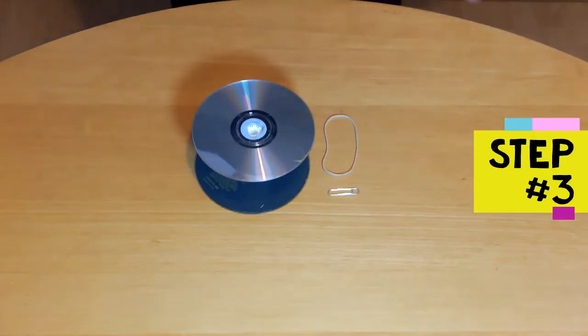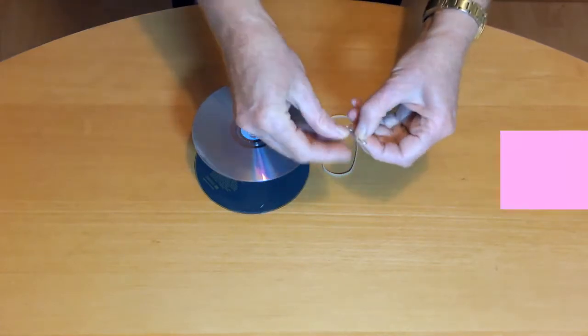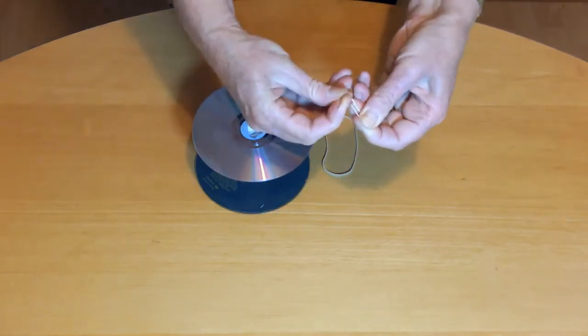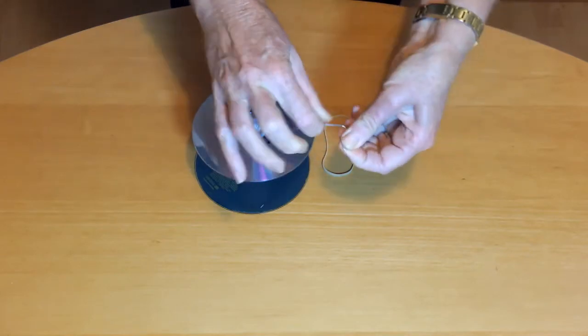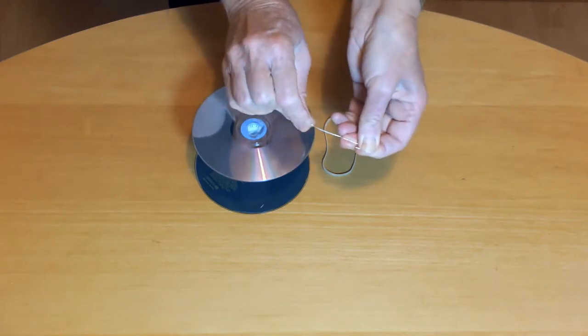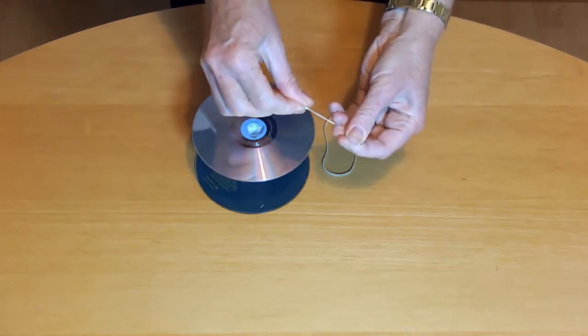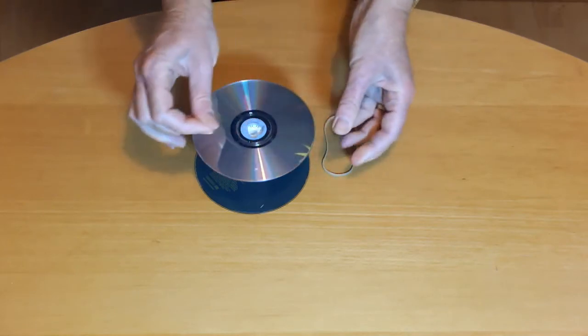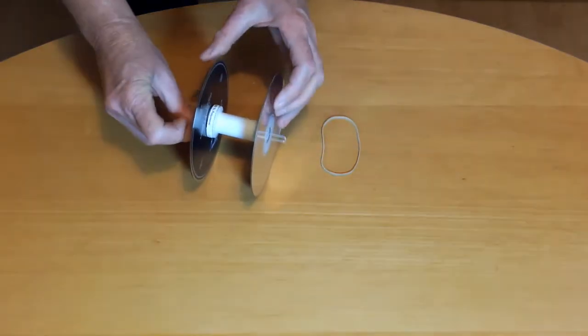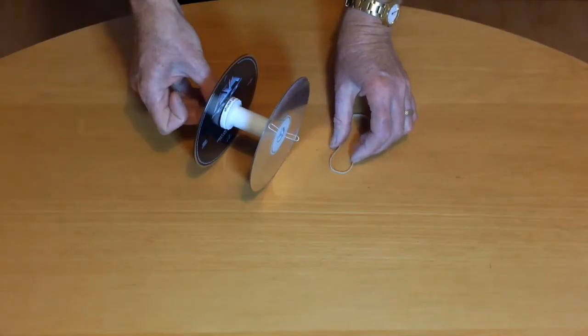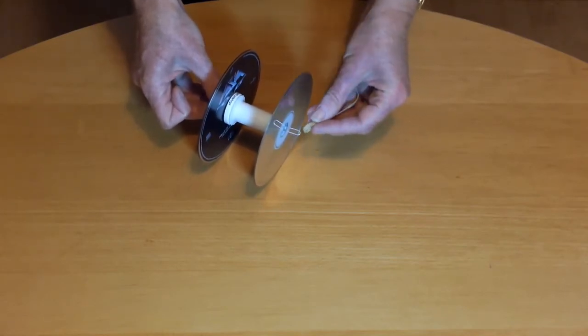Step 3 is to thread the rubber band through. Open up the paper clip to make a hook. Push the hook through the hole in the middle of the CD unit. Hook the end of the rubber band and pull it through so that there's a loop of rubber band sticking out on either side of the CD unit.